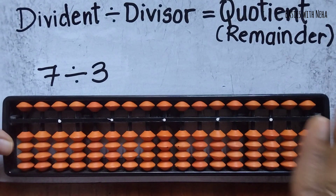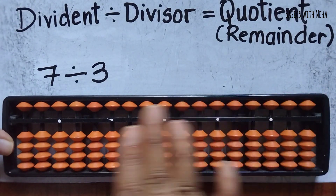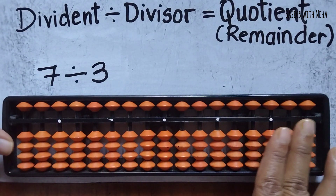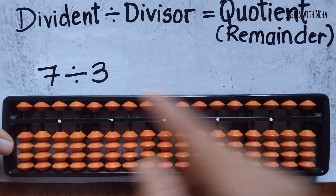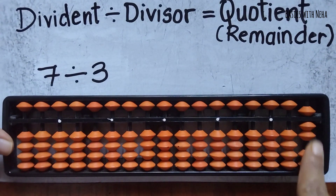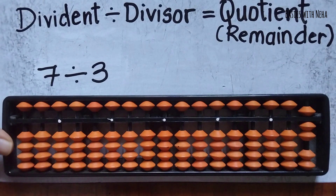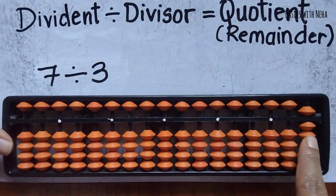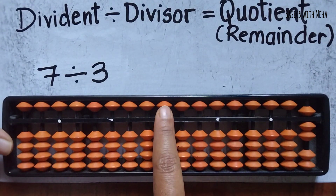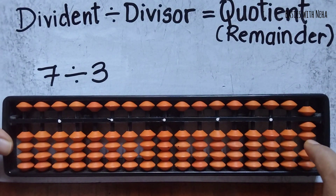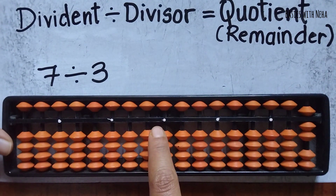In the abacus tool you have to divide it into two parts: the dividend side and the quotient side. The remainder will appear in the dividend part. The dividend is 7, placed in the dividend part. The divisor is 3, kept in mind. I've used one rod, so I'll consider one rod on the quotient side as well.